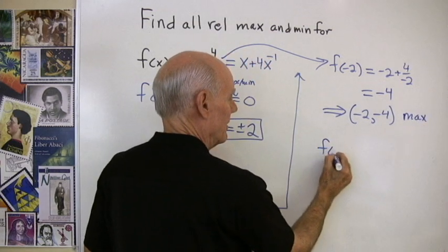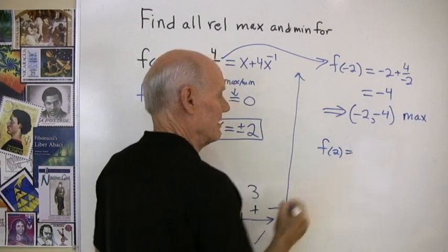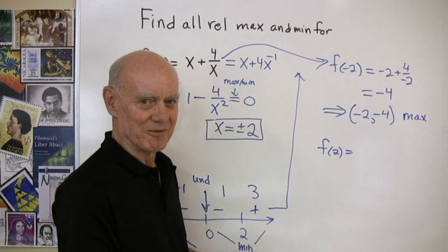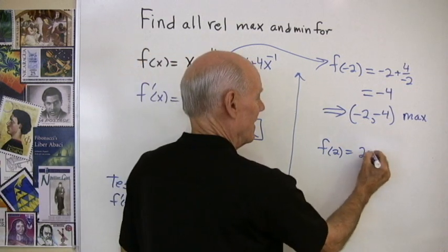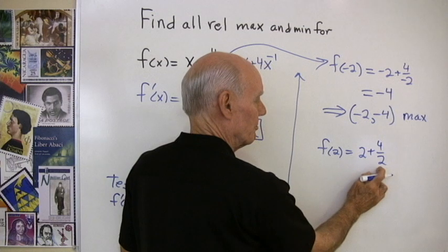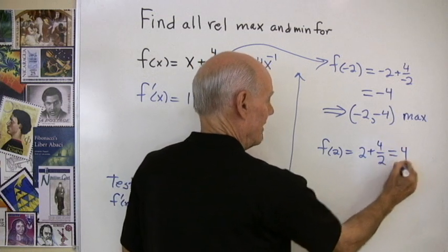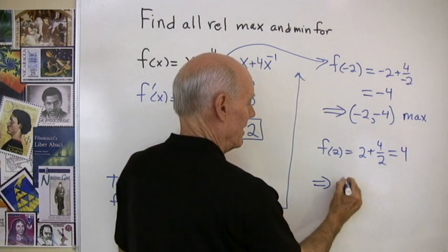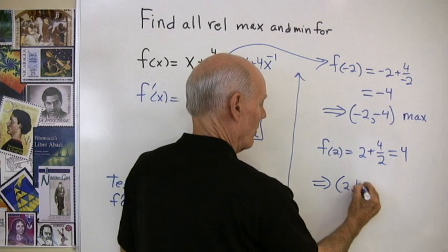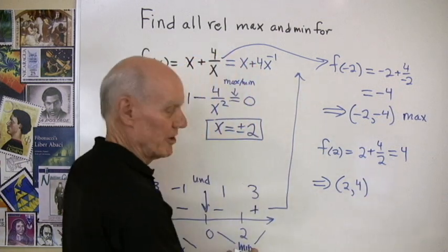Likewise, I put in 2 for x, evaluate the function at x equals 2, I get 2 plus 4 over 2, that's 2 plus 2, which is 4. So that tells me that the point x equals 2, y equals 4, is a relative minimum.